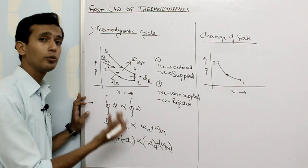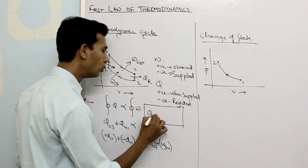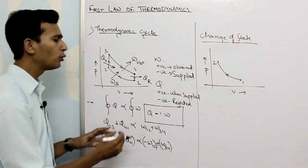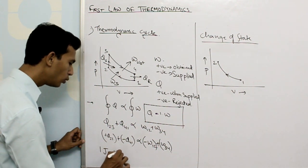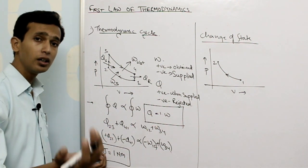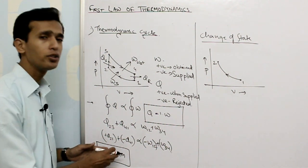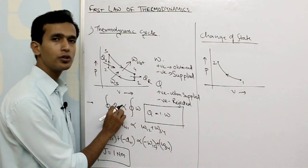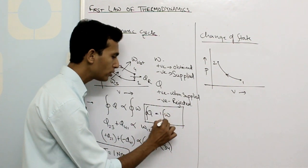To remove the proportionality sign we add a constant. In Joule's experiment on the first law of thermodynamics, Q equals W, meaning the constant is 1. Joule proposed a unit of heat called the Joule, where 1 Joule equals 1 Newton meter. So the constant of proportionality is 1, and we can write Q equals 1 times W. For the complete cycle this becomes the cyclic integral of Q equals the cyclic integral of W.